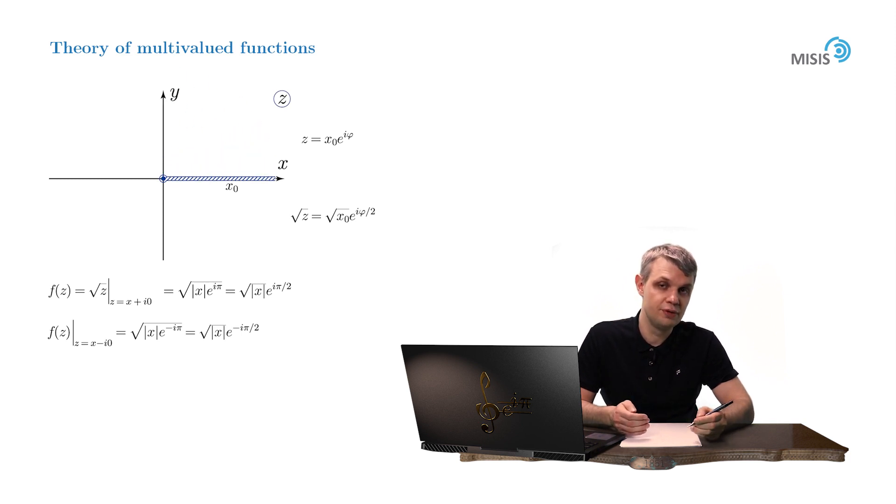If you draw a branch cut along the real positive semi-axis, quite often you need exactly that kind of branch cut. Then strictly positive numbers are forbidden, they are inaccessible. But the square root function is perfectly well defined on the upper or lower banks of the branch cut.